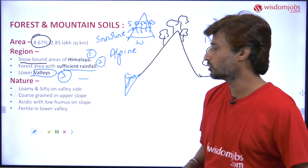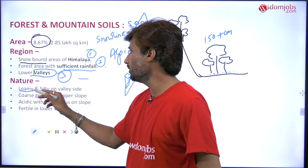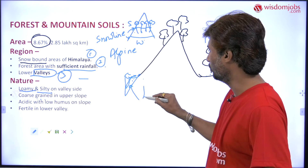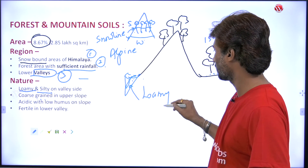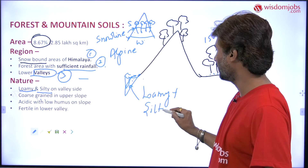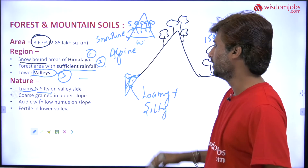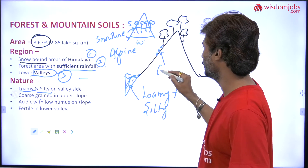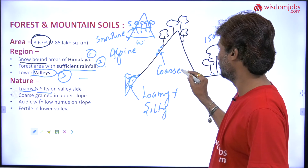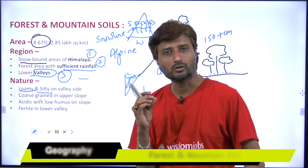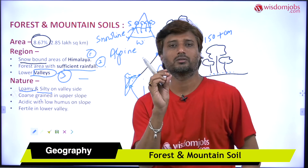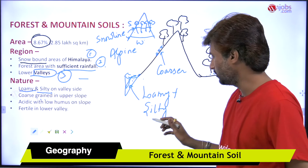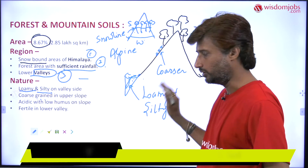Now, what is the nature of this soil? It is loamy and silty on the valley side — fine in texture. But on the slope side, on the upper part, it will be somewhat coarser, meaning the grain size or texture of the soil is larger.